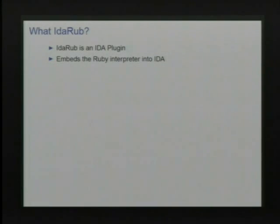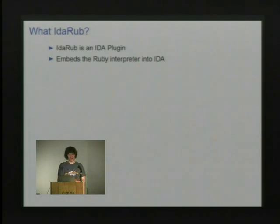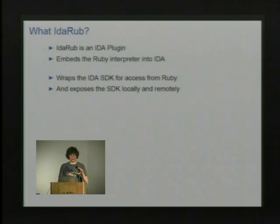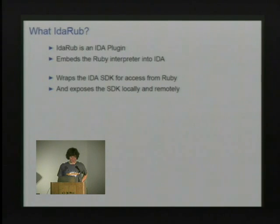So what is IdaRub? How many people here use IDA on a regular basis? IdaRub is pretty simple — it's just an IDA plugin that embeds the Ruby interpreter into IDA and then allows access to the IDA SDK from Ruby. It doesn't really add anything that's not already in IDA; it's just making it more convenient. And it does expose IDA remotely, which I'll talk about.